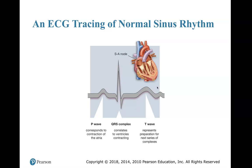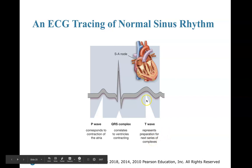This is an EKG tracing of normal sinus rhythm. You have the P wave, which corresponds to contraction of the atria. Then the QRS complex — that big spike — which correlates to ventricular contraction. So atria contracts, ventricle contracts. Then we have the T wave, which represents preparation for the next series of complexes — the heart getting prepared for the next P wave.